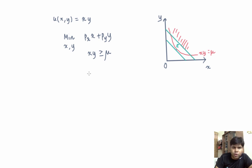So we know that the solution to this problem satisfies the following two properties. Property number one: the slope of the iso-expenditure curve, which is px by py, is equal to the slope of the indifference curve, which is the MRS, and that's y by x in this case. Another property is that this point lies on the indifference curve corresponding to mu level of satisfaction, so xy equals mu.